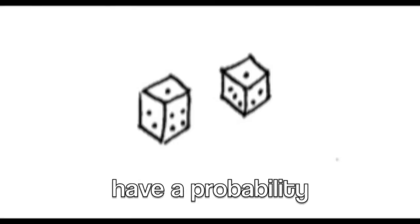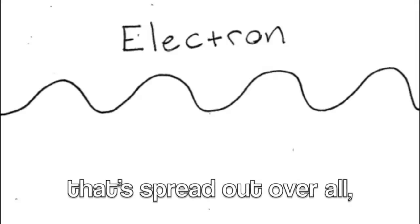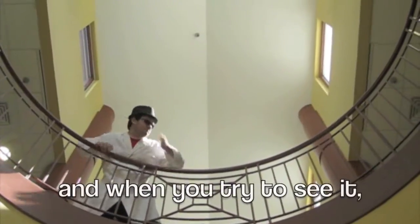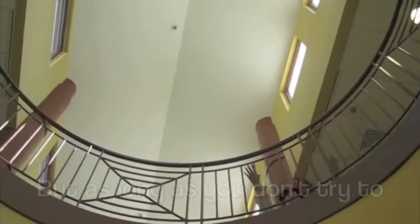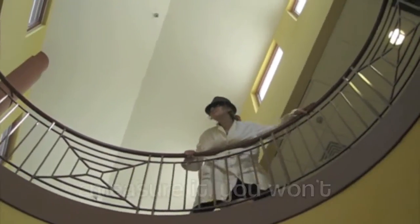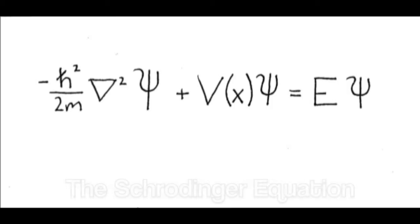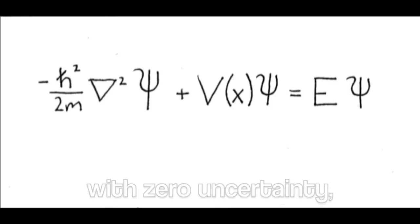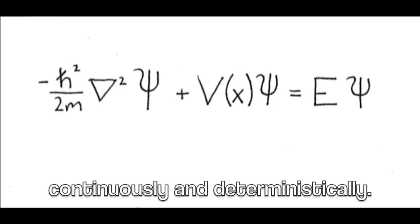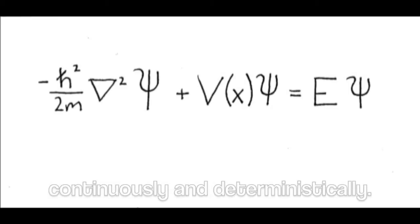Now electrons, you recall, have a probability that's spread out overall. And when you try to see it, it curls up in a ball. But as long as you don't try to measure it, you won't collapse the wave function. The Schrödinger equation will predict the wave function with zero uncertainty, continuously and deterministically.